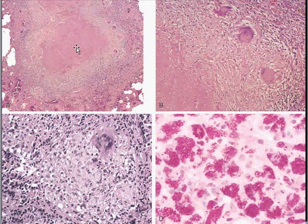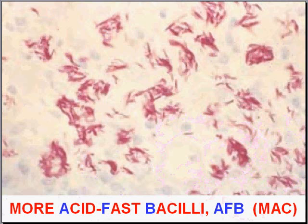These granuloma images could represent any organism that causes granulomatous inflammation — any acid-fast bacilli or any fungus. If you do an acid-fast stain (Ziehl-Neelsen stain) on these granulomas and see clusters of red rods, those are acid-fast bacilli. Here is a closer view of one individual acid-fast bacillus — in this case an atypical acid-fast bacillus of MAC. But it could be leprosy, TB, or another type of acid-fast bacillus.